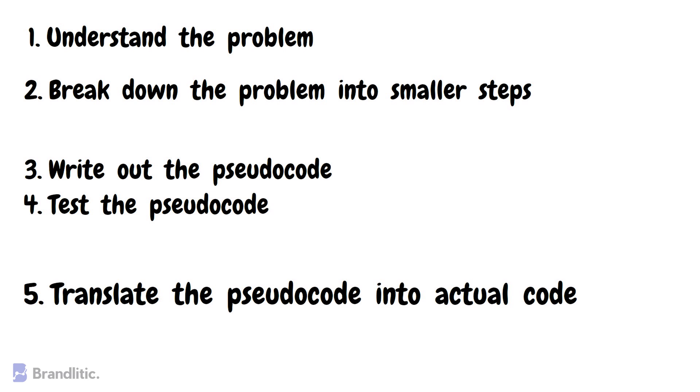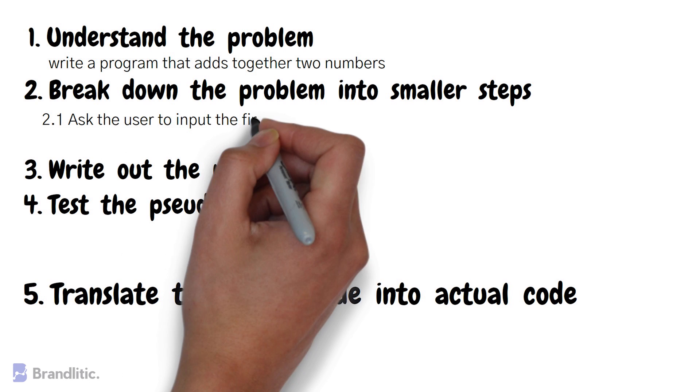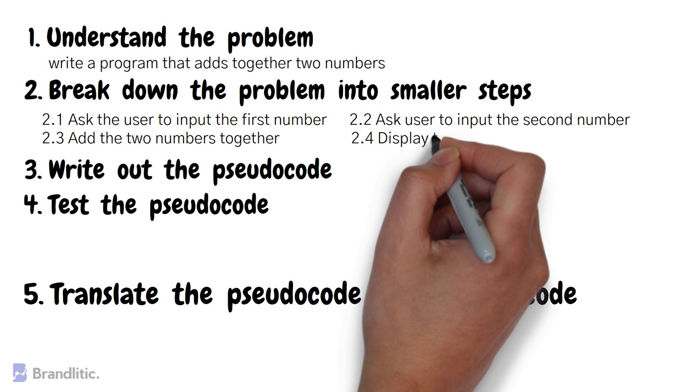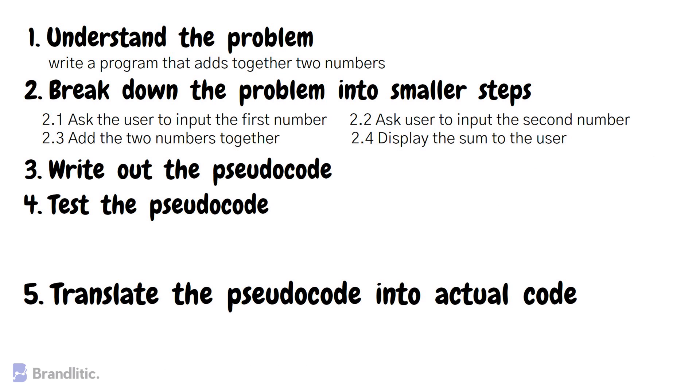Step one, understand the problem. The problem here is to write a program that adds together two numbers. Step two, break down the problem into smaller steps. To add two numbers, we need to ask the user input for the first number, then ask the user to input the second number, then add the two numbers together, and finally display the sum to the user.